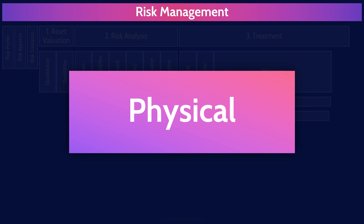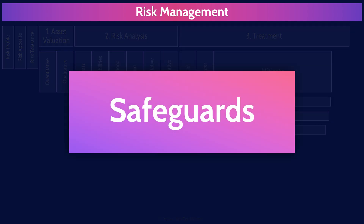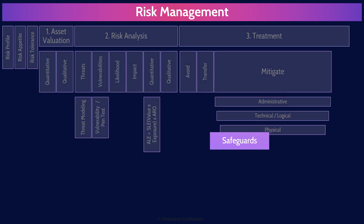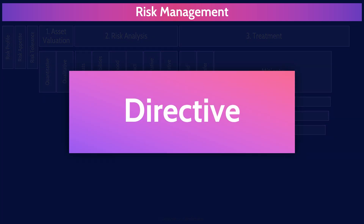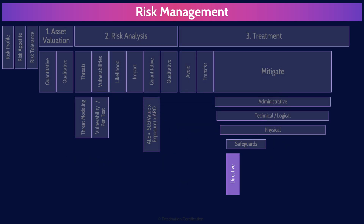We can categorize controls into two major groups: safeguards and countermeasures. Safeguards are the controls we put in place to try and ensure a risk doesn't occur. Within safeguards, we have three controls. Directive controls provide guidance and instruction to personnel on how to handle risks — they direct behavior. Policies are a perfect example of directive controls.